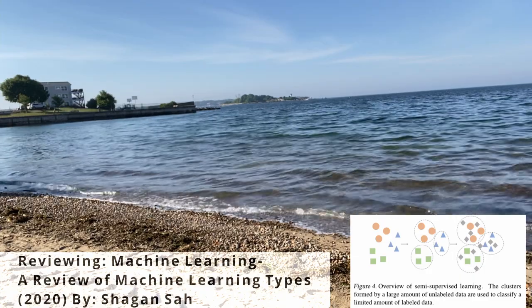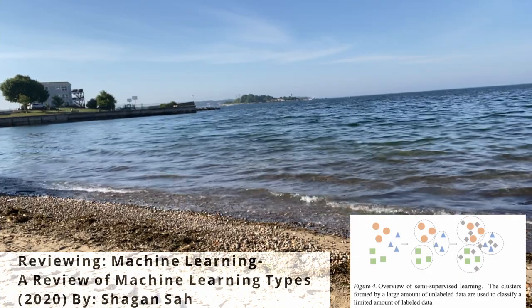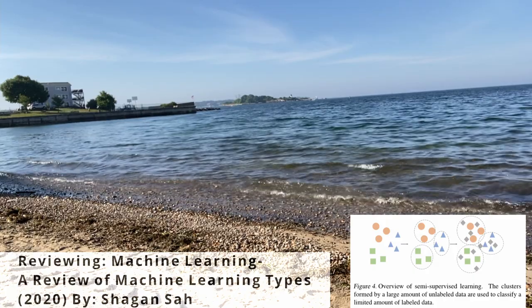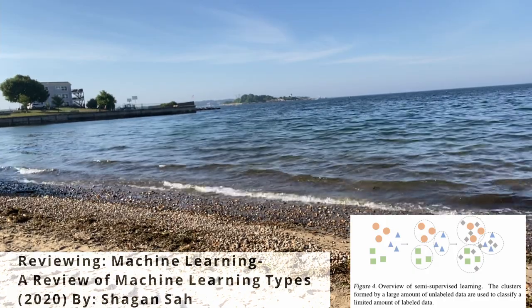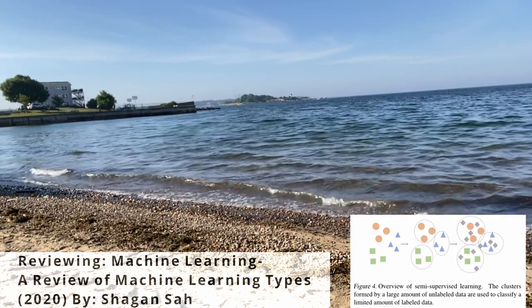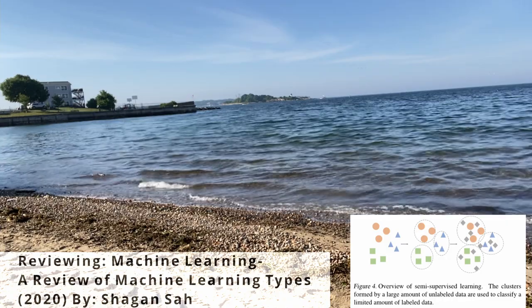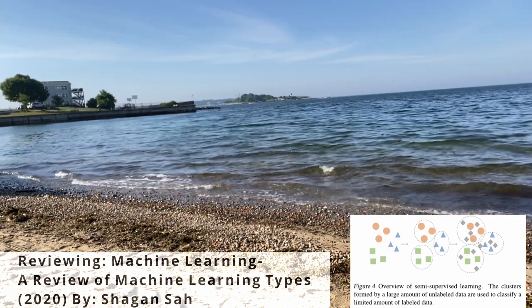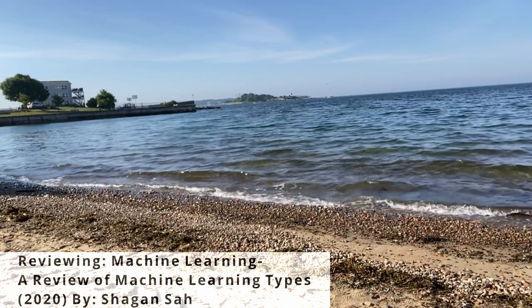In that scenario the machine figured out the different features that create and identify a cat, but then you are saying those features are called 'cat' so that when the machine finds it somewhere else in another dataset it understands what label to assign.